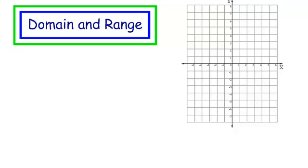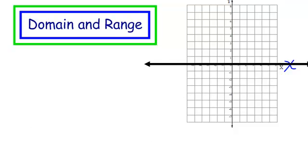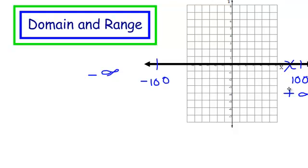We are going to talk about the domain and the range. Domain is just our first coordinate in an ordered pair — we usually think of it as our x's. Our x's run from the left to the right. I have x's way down here, even at negative 100; this goes on and on to negative infinity. Up here, I could go to 50, 100, 200 — this goes on and on to positive infinity.